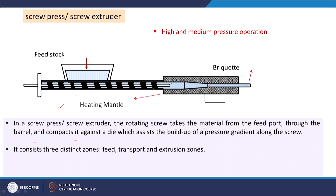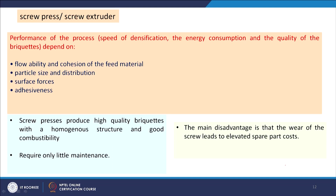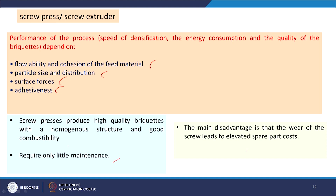The screw press consists of three distinct zones: the feeding zone, the transport zone, and the extrusion zone. Performance depends on factors including ductility and cohesion of the feed material, particle size and its distribution, and surface forces and adhesiveness. The screw process produces high quality briquettes with a homogeneous structure and good combustibility, and requires only little maintenance.